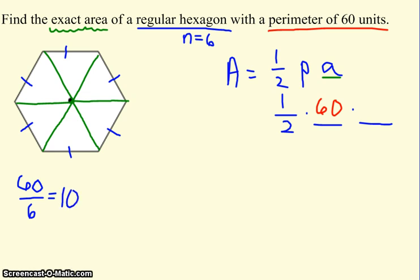60 divided by 6 is going to be 10. So that's telling me that if the perimeter is 60 and all six sides are the same because it's regular, all of those sides will be 10 units long. So that's getting us closer to finding the apothem.